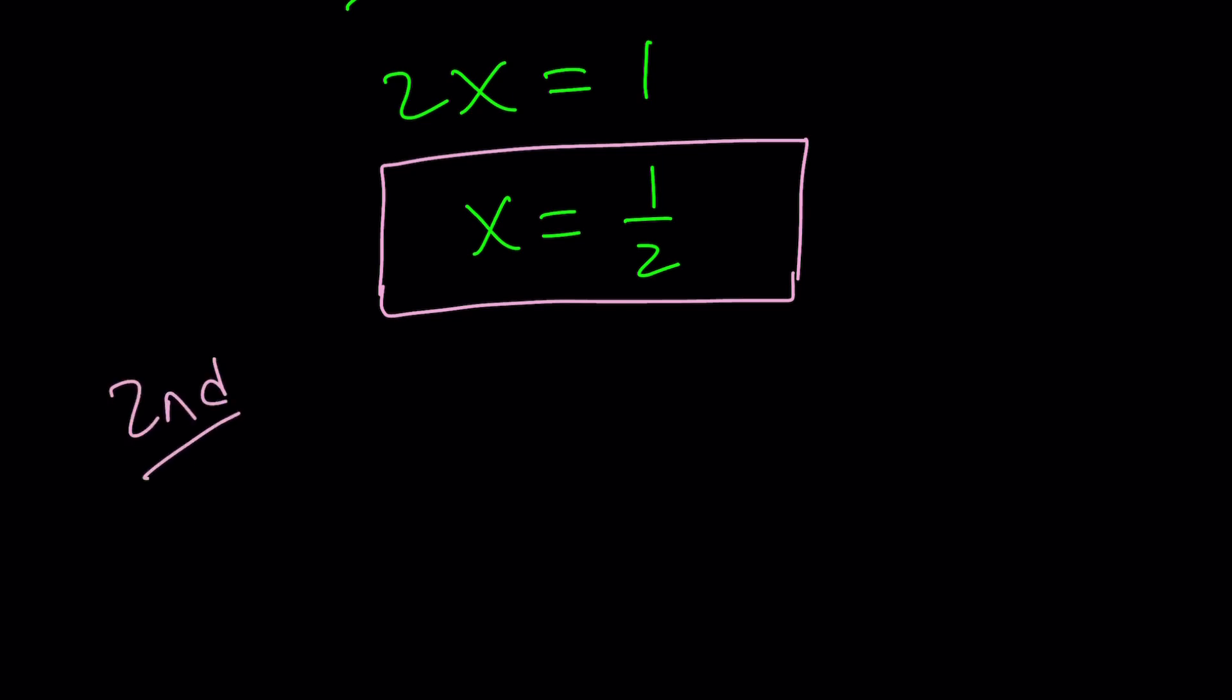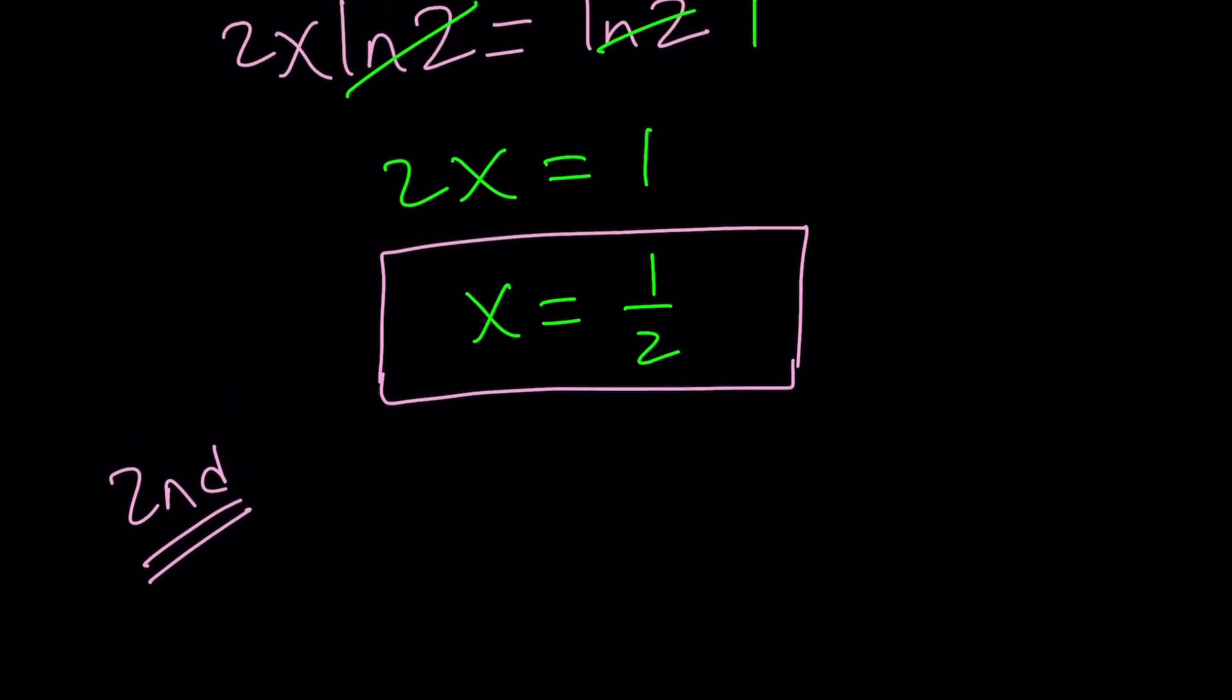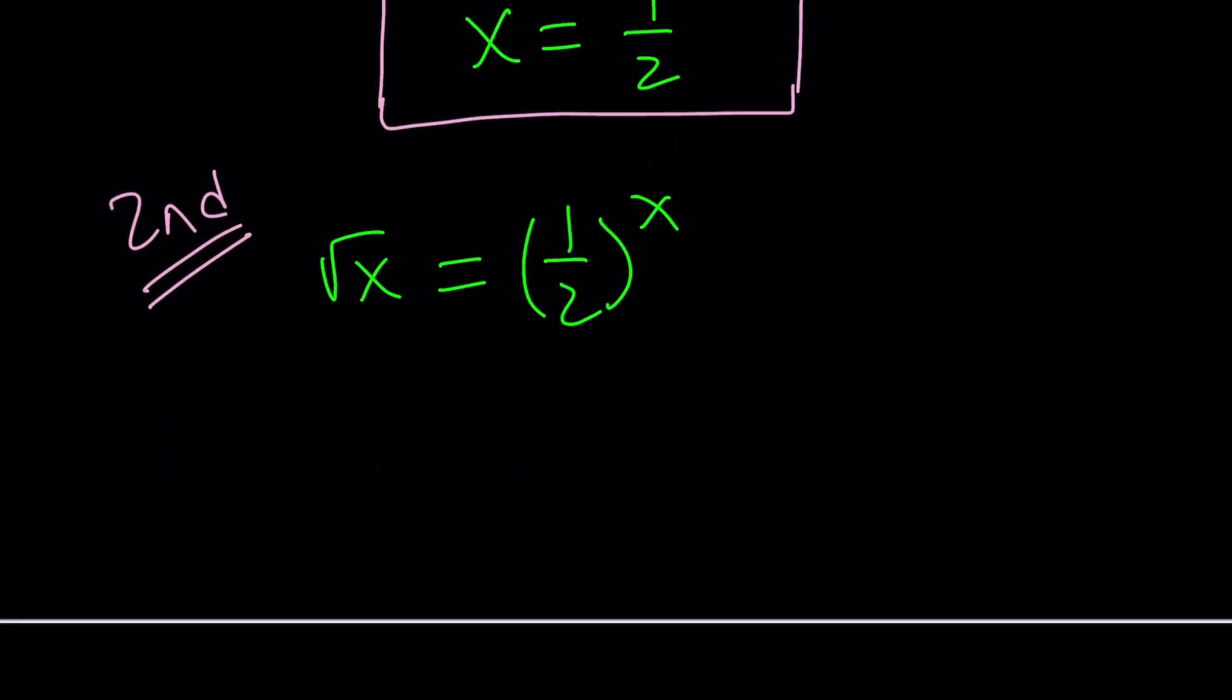Okay, so let's call this second method. The second method is going to be ridicule, so don't laugh at it. Or you can laugh at it. But don't laugh at me. So, we have square root of x equals 1 half to the power of x. I don't know if you noticed, but square root of x can be written as x to the power 1 half.